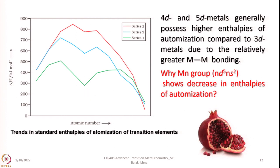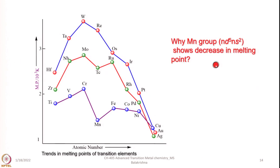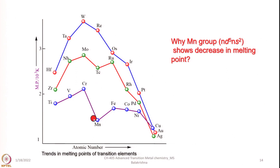This decrease in enthalpy of atomization for the manganese group is also reflected in the melting point. The manganese group shows a decrease in melting point: since the enthalpy of atomization drops, separating these atoms becomes easier and hence the melting point also drops for elements having Nd5, Ns2 electronic configuration. In the absence of bridging ligands, the formation of metal-metal bonds is difficult for these early transition elements because they do not have sufficient unutilized electrons in their D orbitals.